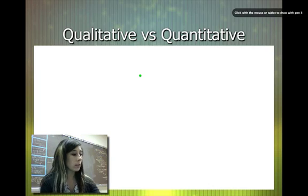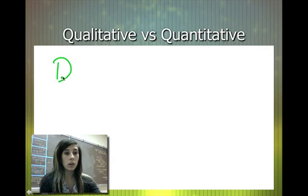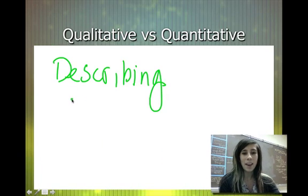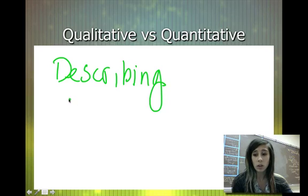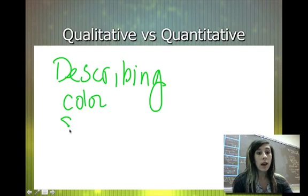Qualitative data and qualitative research may be things that are describing. You may describe what the monkeys look like — their color: brown, red, black. You may look at their size. Basically, the qualities of what you're observing or what you're studying.